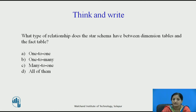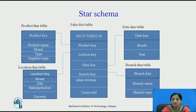Think and write: what type of relationship does the star schema have between dimension tables and the fact table? Is it one-to-one, one-to-many, many-to-one, or all of them? Looking at the previous slide, a business process or fact such as sales revenue is described by multiple dimensions — the date of the sale, the branch, the product sold, and the location. So one fact is described by multiple dimension tables, meaning the relationship between dimension tables and the fact table is many-to-one.